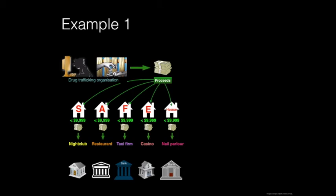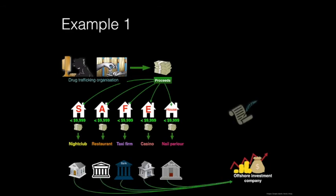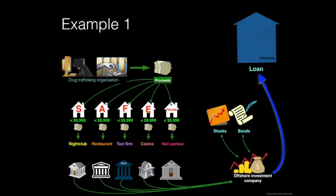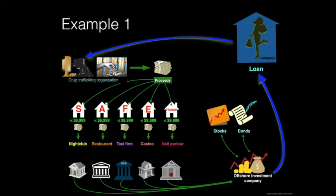Once deposited, the money is wired to an offshore company account where it is used to purchase stocks and bonds. The securities are subsequently sold and the money is transferred into another company's account under the cover of a loan, eventually used to pay the credit card bills of the wife of a senior member of the drug trafficking organisation — who frequently visits designer boutiques in Paris or Milan. That senior member is, in this case, your ultimate beneficial owner.